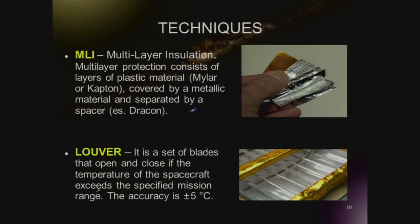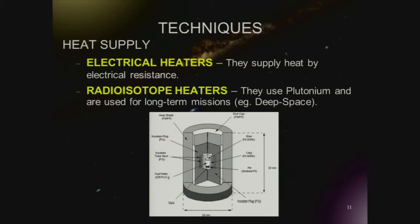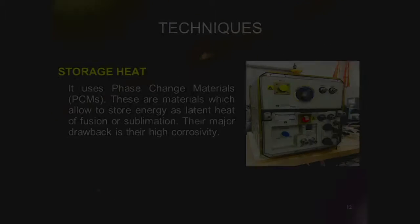A better technique is multi-layer protection with Kapton, which is a metallic material. Another option is louvers — a blade that rotates when the temperature gets higher or lower. For supplying heat, we can use electrical heaters or radioisotope heaters, especially for deep space missions where we have the sun providing power.